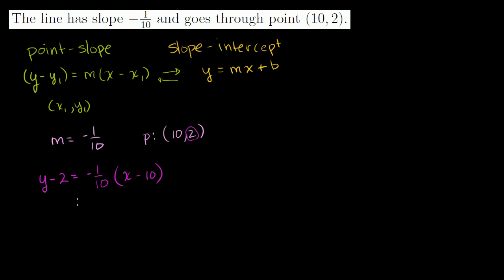There are two things to point out. First, why does this make sense? If you divide both sides of the equation by (x minus 10), you get (y minus 2) over (x minus 10) equals negative 1 over 10. That's the change in y over the change in x for any point (x, y) on that line relative to the point (10, 2) — which is just the definition of slope.